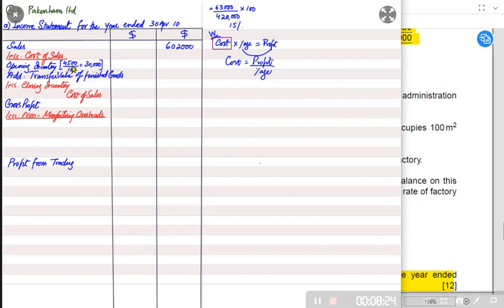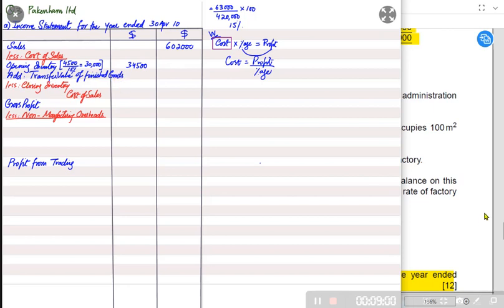If the factory cost of opening inventory was 30,000 and the factory charged 4,500 profit (15% markup), adding cost and profit gives us the transfer price: 30,000 + 4,500 = 34,500. This is the transfer price of the opening inventory — what the goods cost the factory to make, plus the 15% markup charged to the outlet.